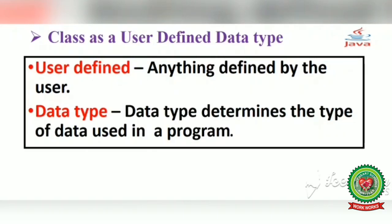Data type means the type of data used in a program. Type of data means whether we are using integer data — that is, whole numbers without a decimal point — or float data, that is, with a decimal point. We also have character data type for single or multiple characters, and boolean data type to take an answer in the form of true or false.